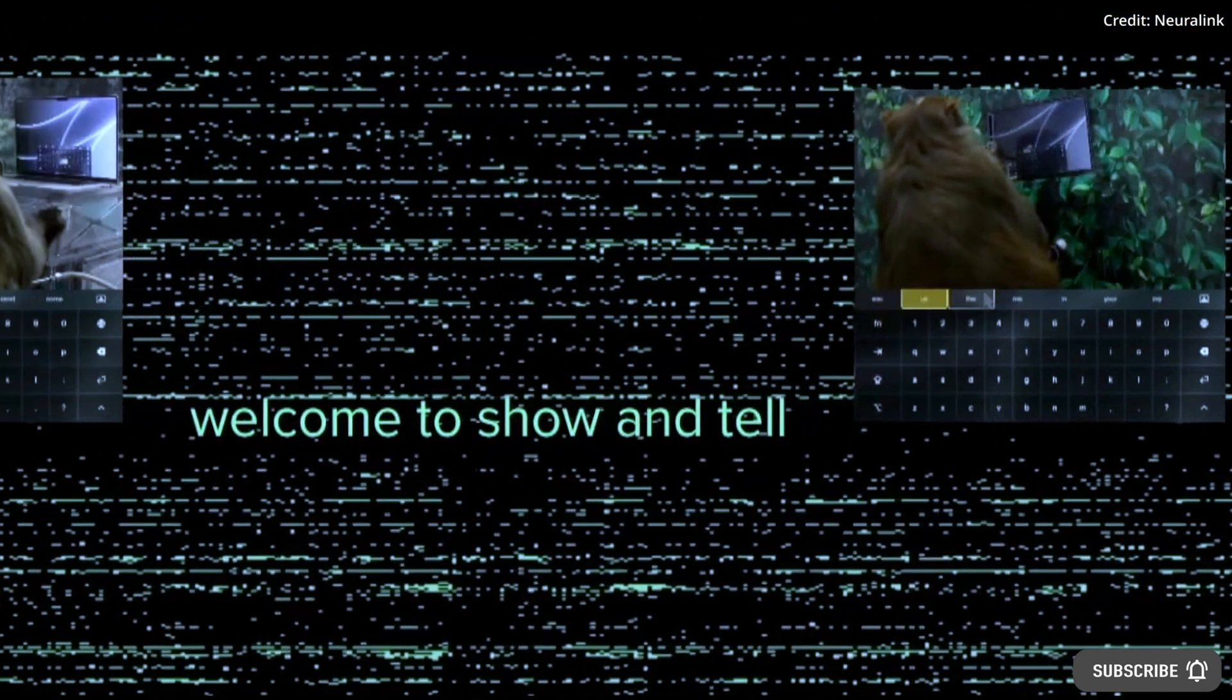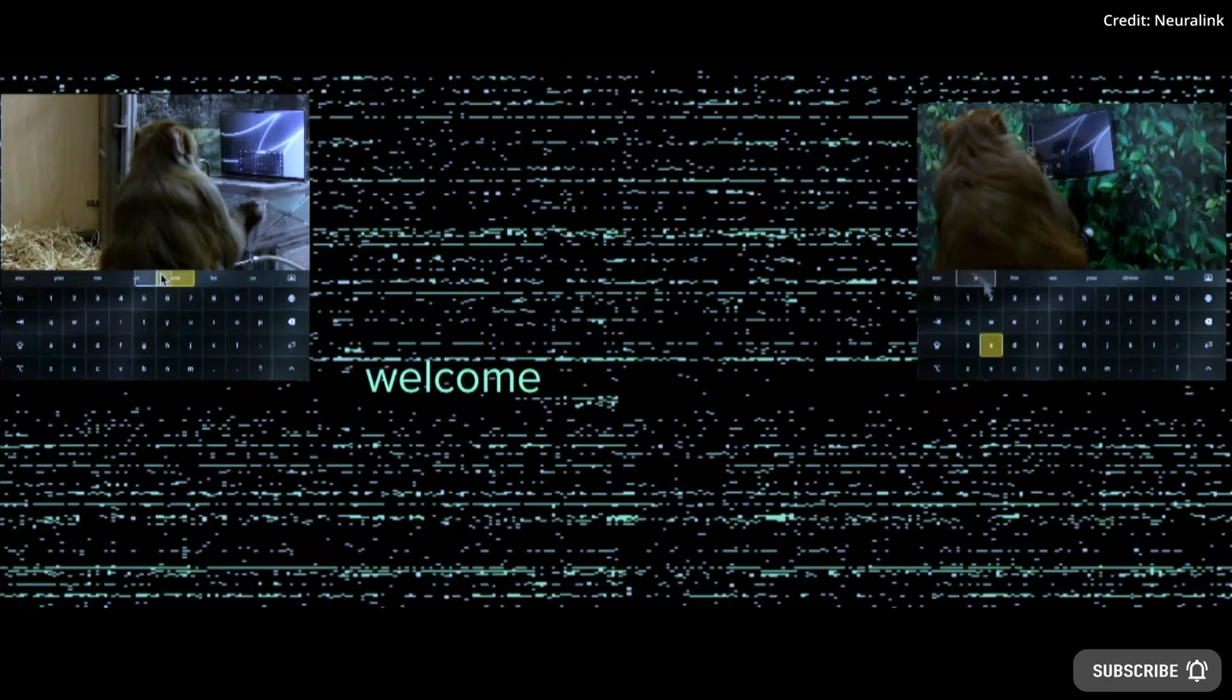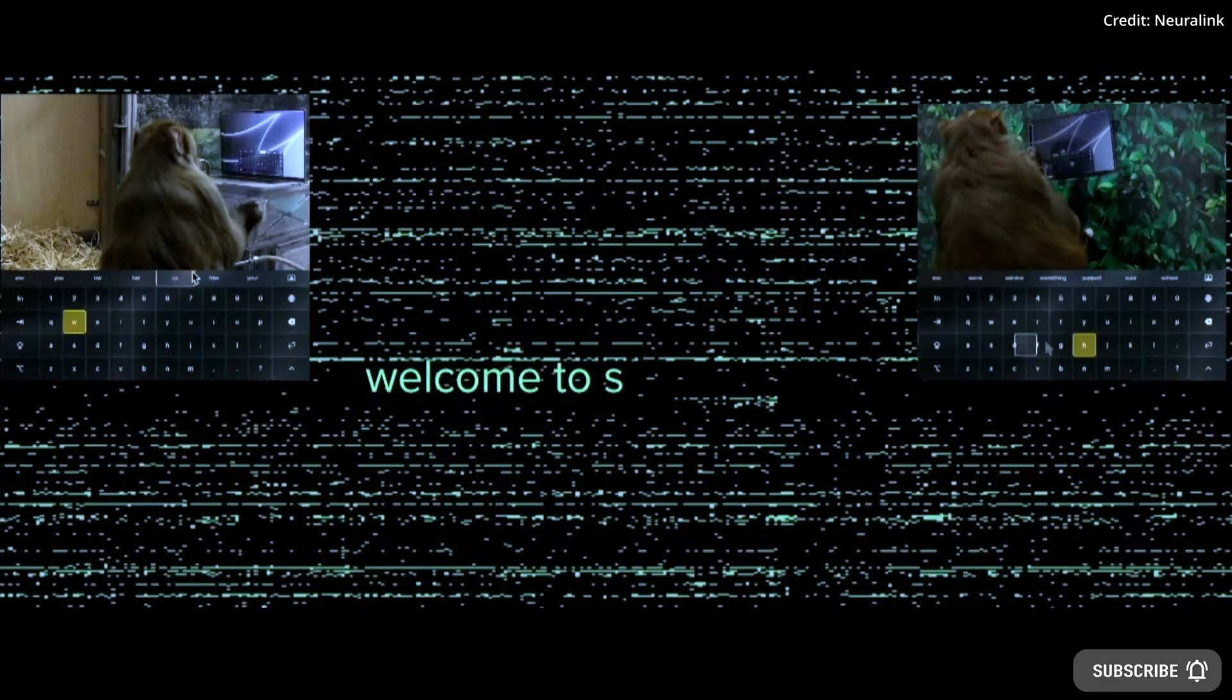Musk went on to show a Neuralink monkey that was typing on a computer with its brain, spelling out various words for the presentation.